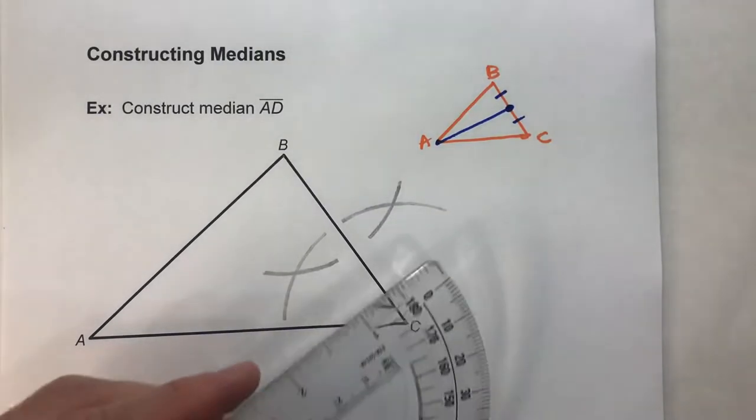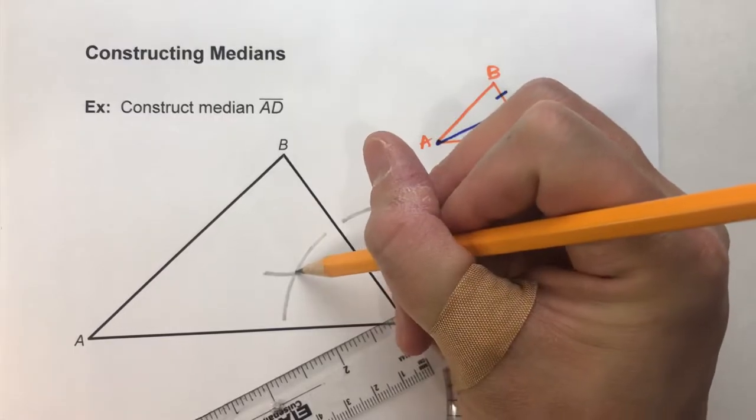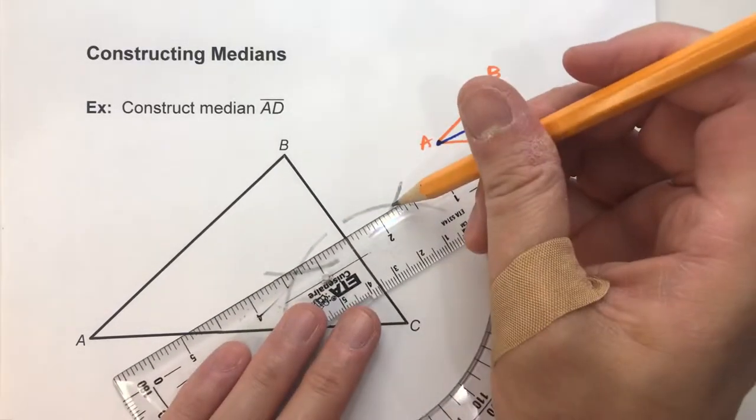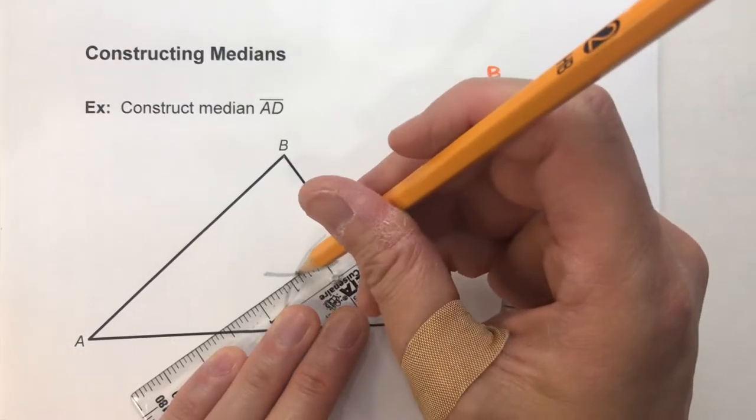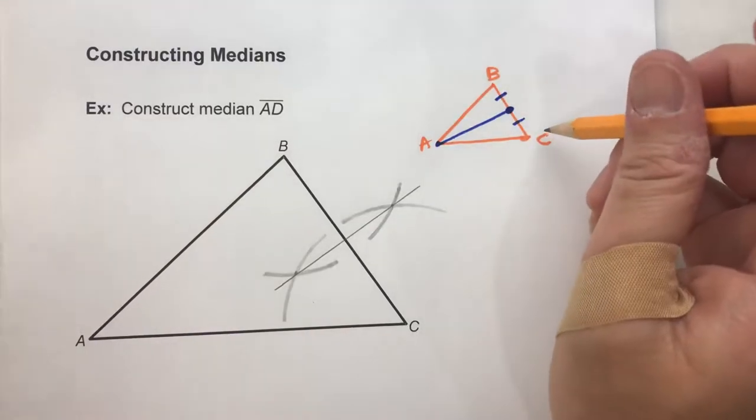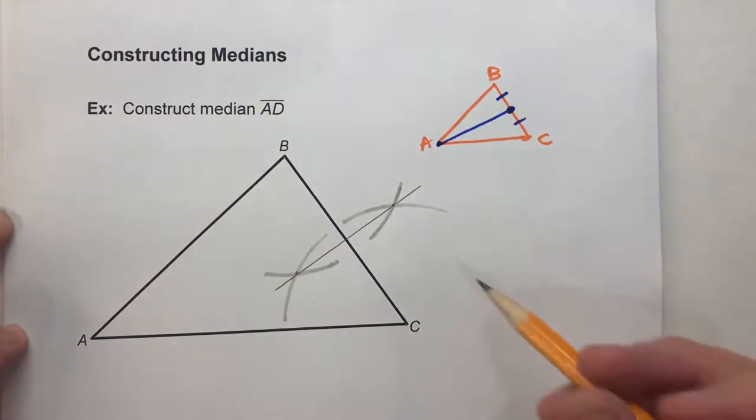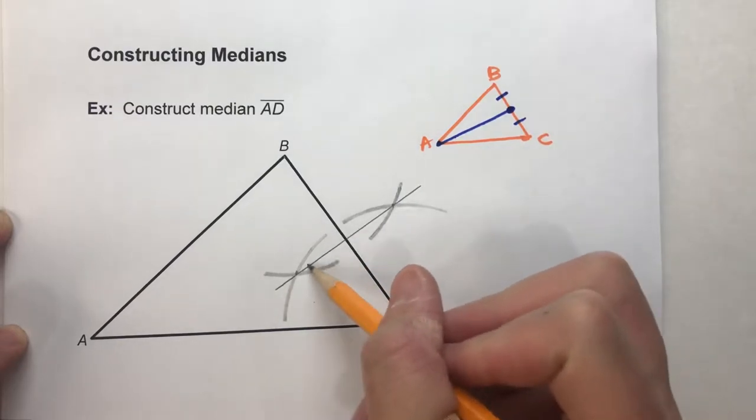Now I know where my perpendicular bisector is going to go. It's going to go through this point and this point, where the two arcs intersect. And I don't have to draw it super dark, because the perpendicular bisector isn't the construction we're looking for. But this is my perpendicular bisector,